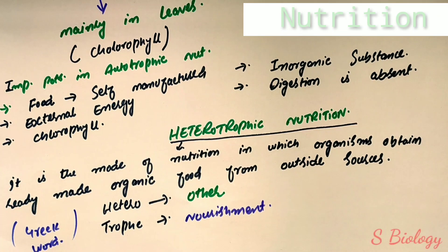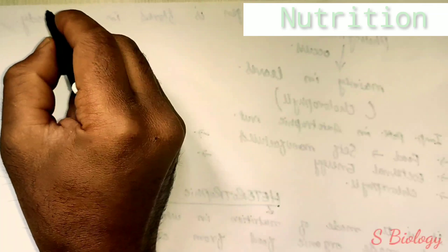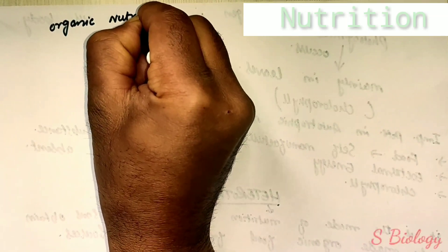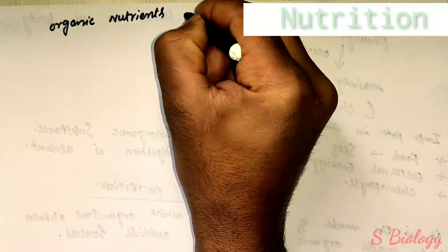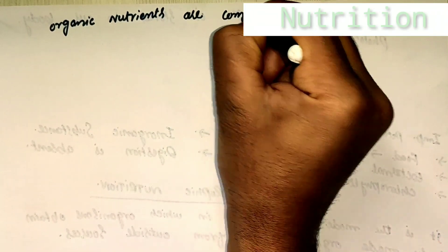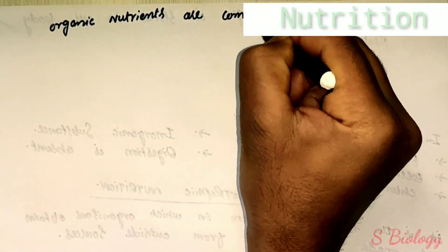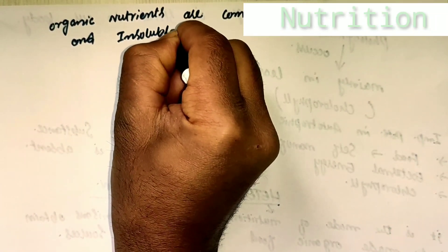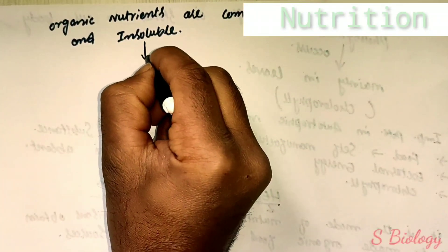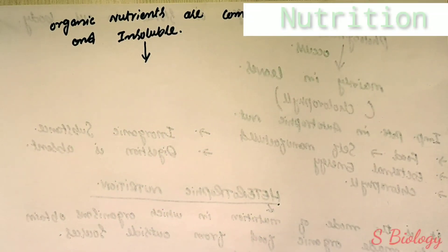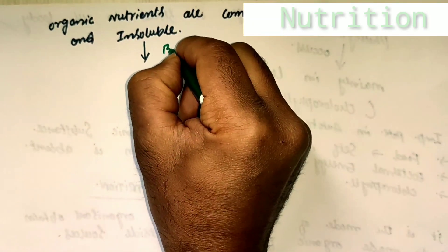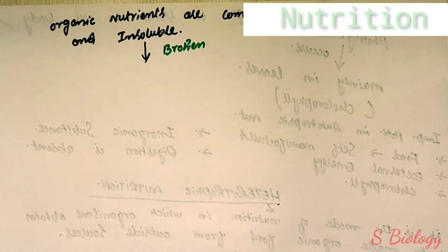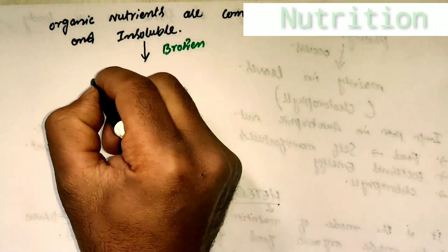You can now easily differentiate between heterotrophic and autotrophic nutrition. In heterotrophic nutrition, organic nutrients are complex and insoluble; they are first broken down into simpler and soluble substances with the help of digestive enzymes, and this process is known as digestion. These organic nutrients are complex and cannot break down easily without enzymes.